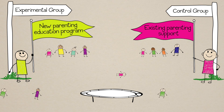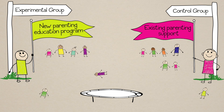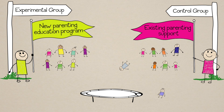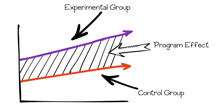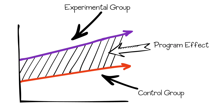RCTs are often regarded as the gold standard when it comes to conducting research in child welfare and other human service settings, because they're very good at isolating the impact of our intervention from other possible explanations for outcome changes. Because the experimental and control groups look almost exactly the same after randomization, except that one group receives the new intervention and the other does not...